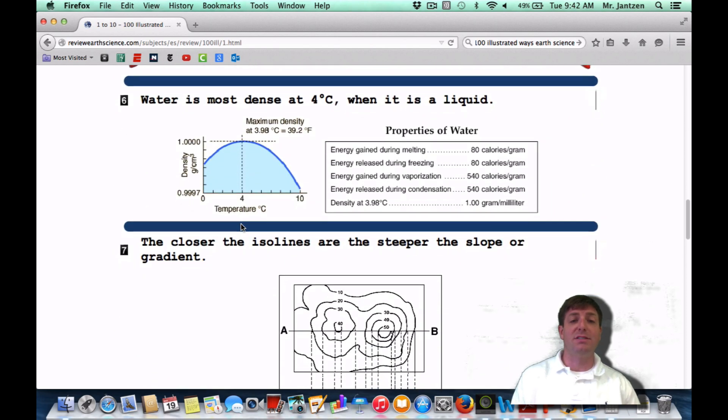Number six, water is most dense at four degrees Celsius when it's a liquid. Water is a very special substance in the sense that it is most dense at four degrees. When you get a little bit less than four degrees, that means you're approaching freezing. The molecules are going to spread out when it freezes, when it gets to that crystalline shape.